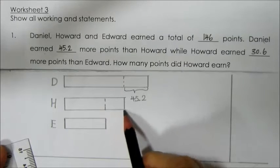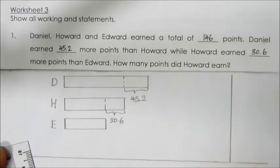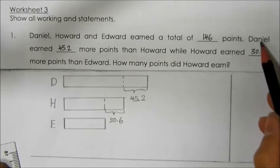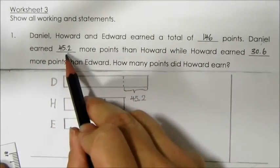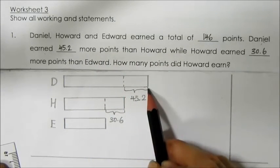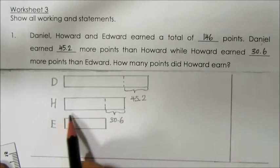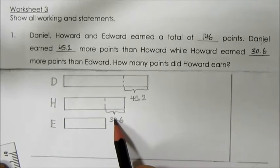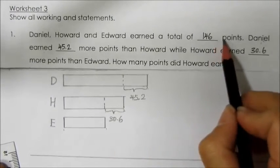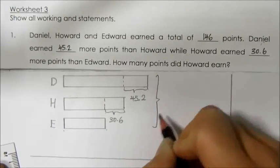The portion here represents 30.6. So from the model, Daniel earned 45.2 more points than Howard, and Howard earned 30.6 more points than Edward. Not forgetting that the question tells us the three of them earned a total of 146 points.